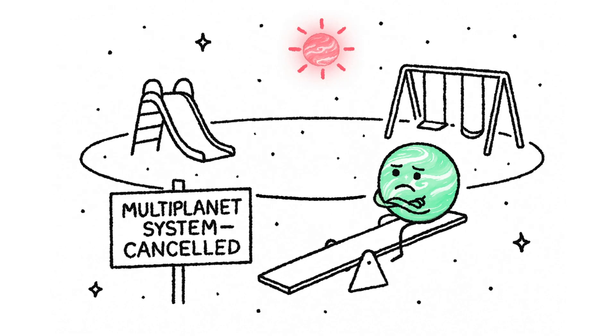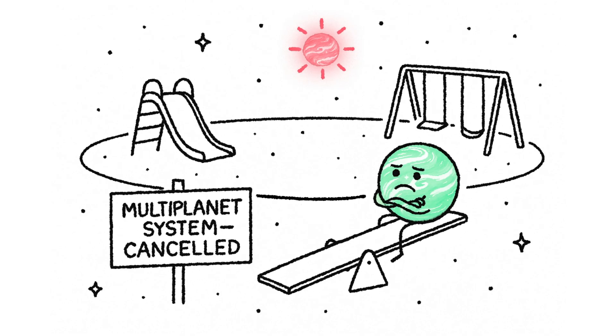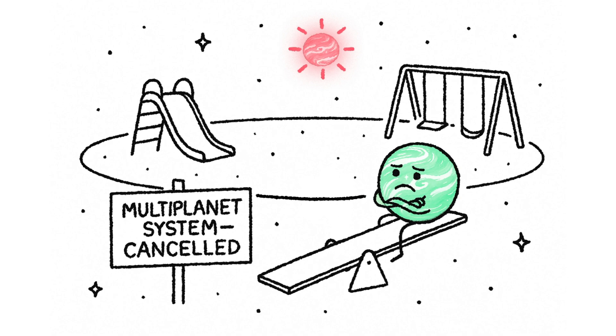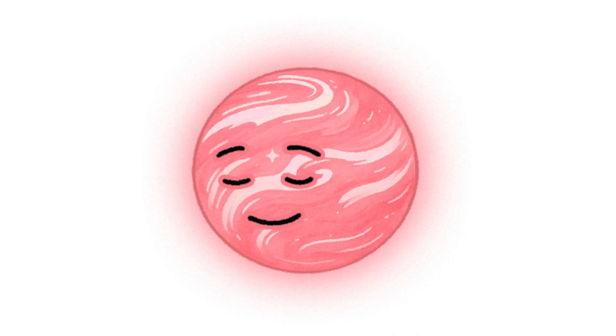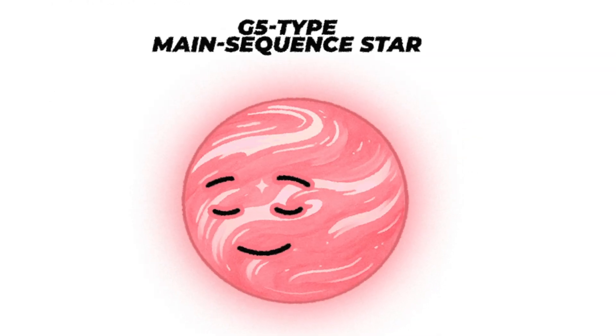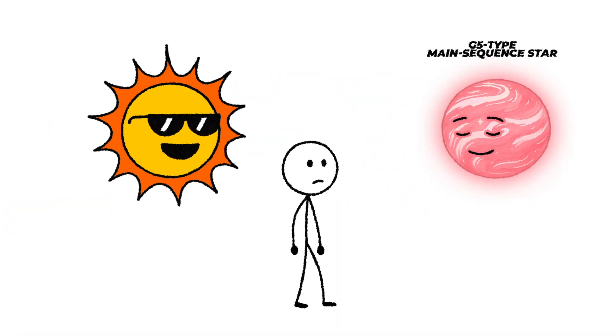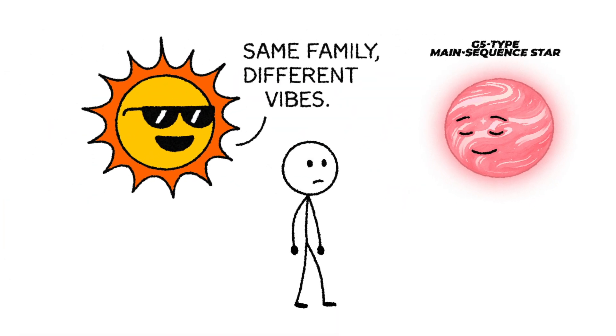Kepler-22b lives in a star system with just one known planet, itself. No siblings, no moons to speak of, just one lonely rock doing laps around its star. That star, Kepler-22, is a G5-type main-sequence star, a bit smaller and cooler than our sun, but still in the same stellar family.